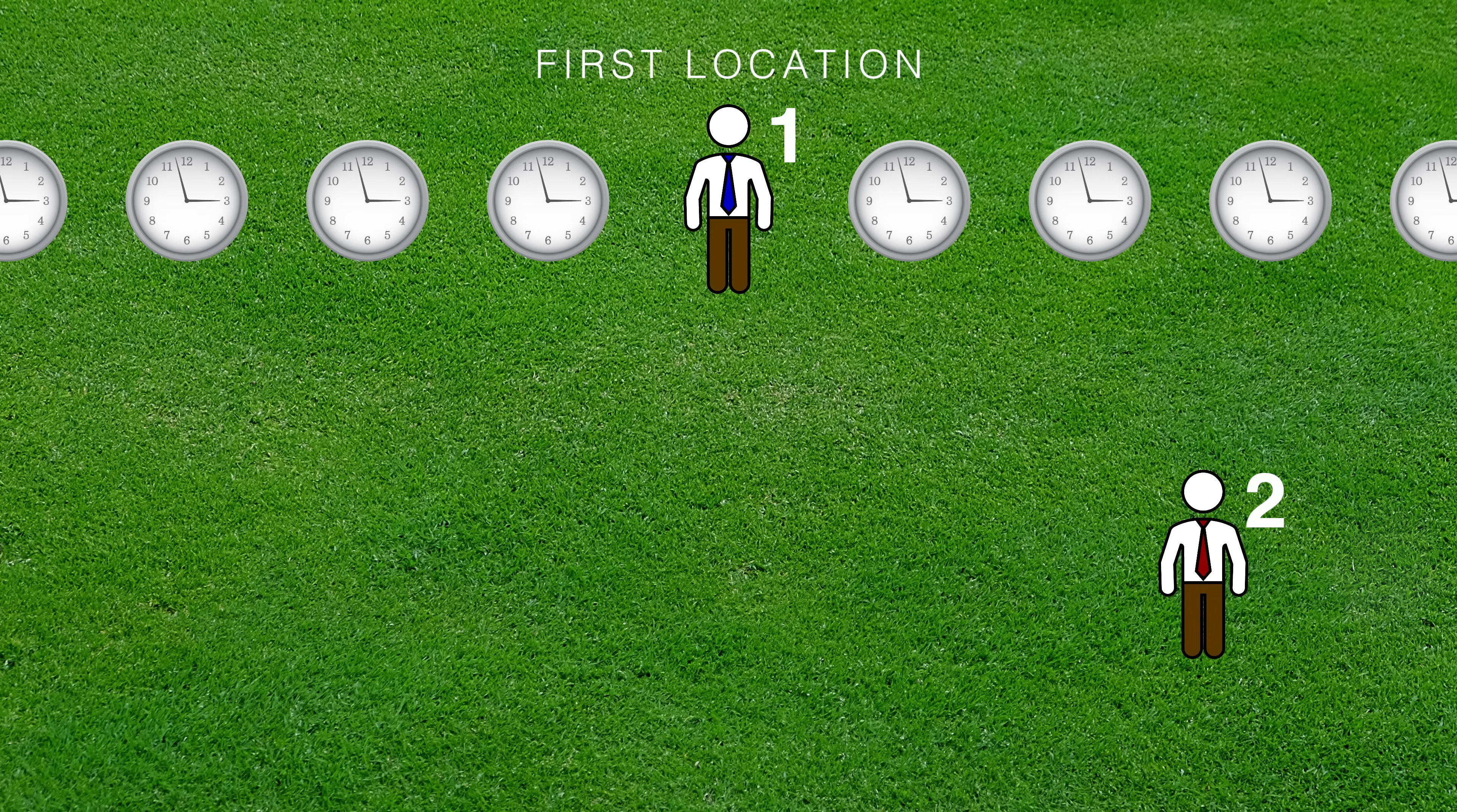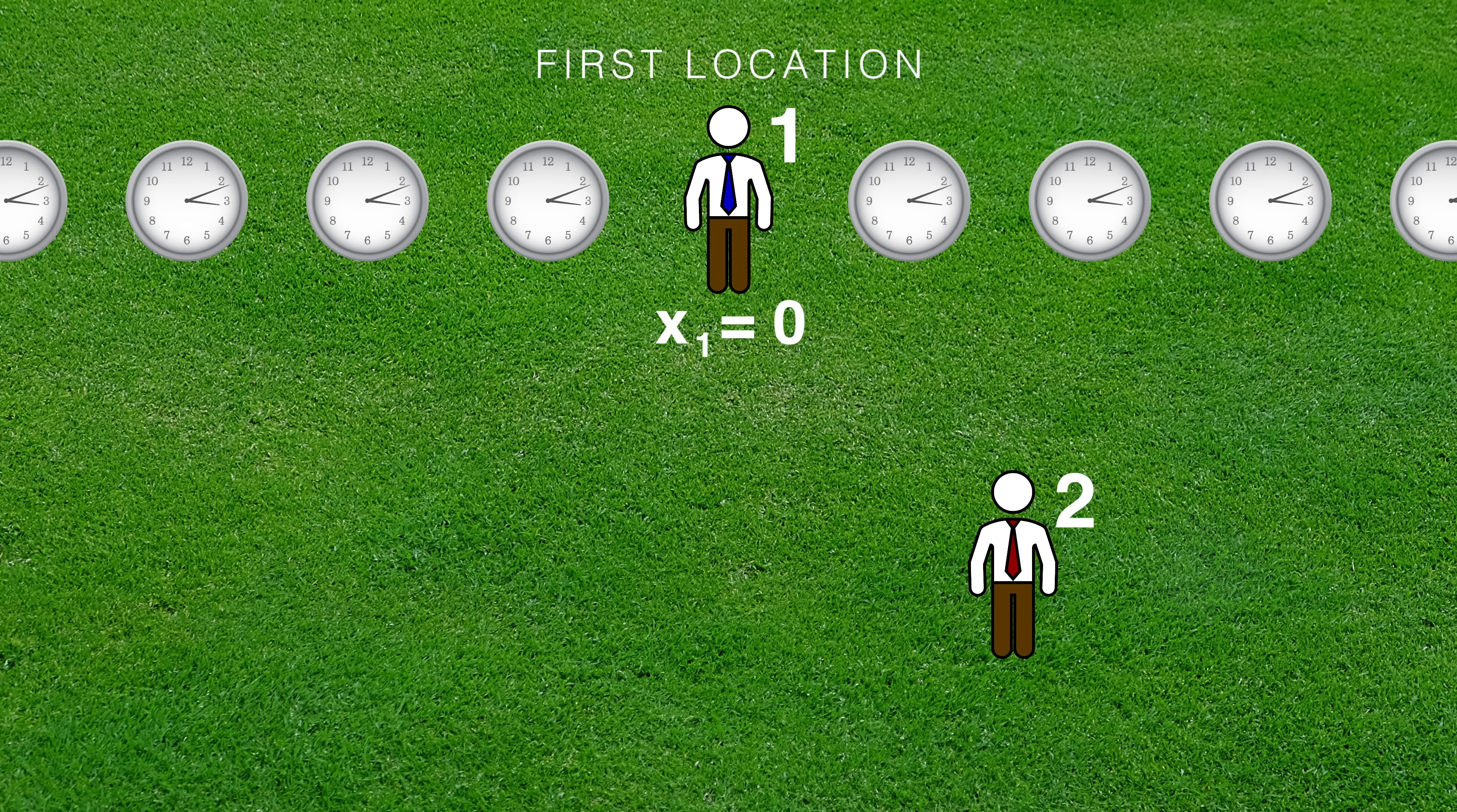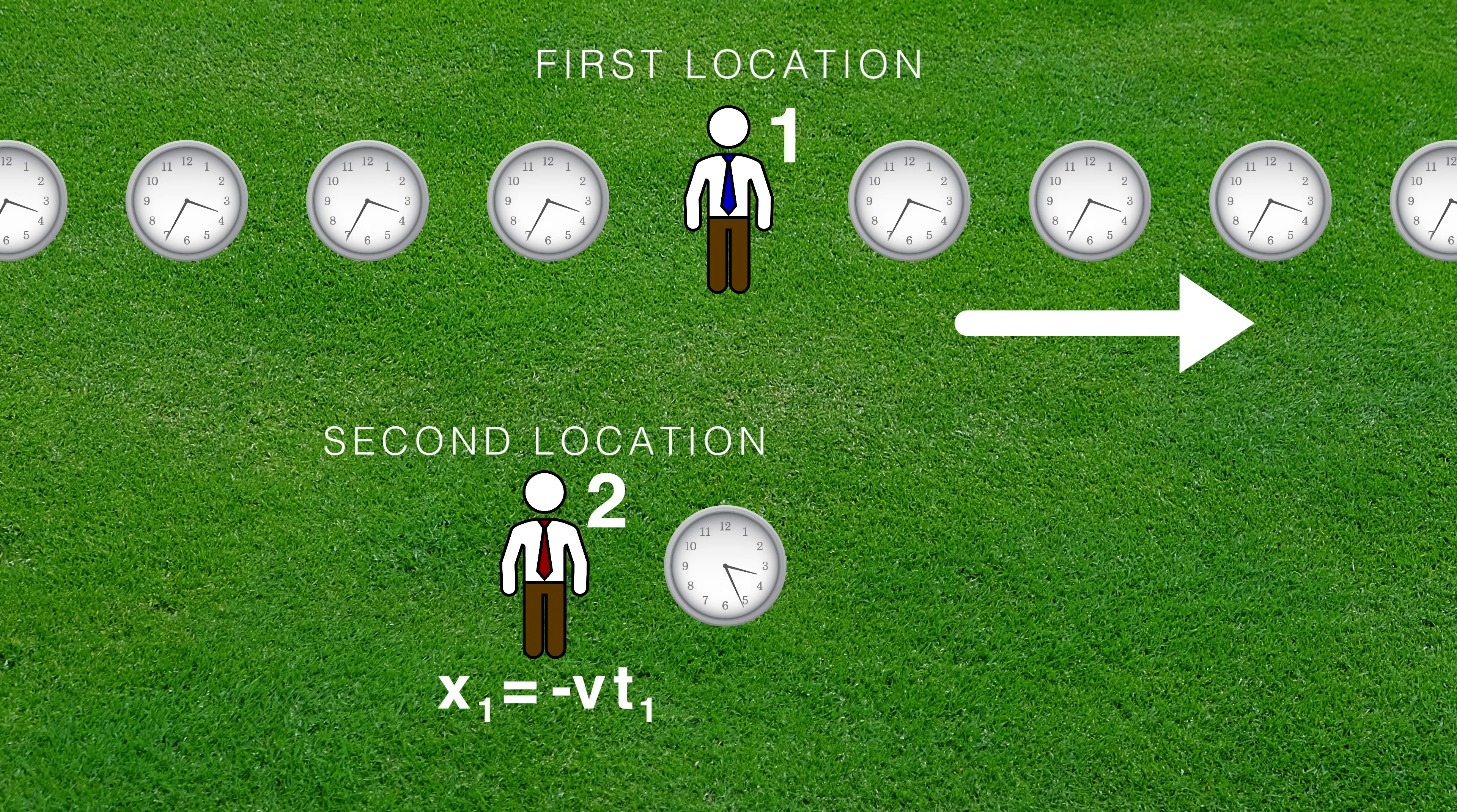Observer 1 always thinks his location is x sub 1 equals 0. Since Observer 1 thinks Observer 2 is moving to the left at velocity v, he sees Observer 2's position is changing. According to Observer 1, Observer 2's position is just x sub 1 equals minus v times t sub 1. Let's stop the motion and concentrate just on the two locations and times as seen by Observer 1. His own location is simply x sub 1, t sub 1 equals 0, t sub 1. Now let's write down Observer 2's location as seen by Observer 1. It is just x sub 1, t sub 1 equals minus v times t sub 1, t sub 1.